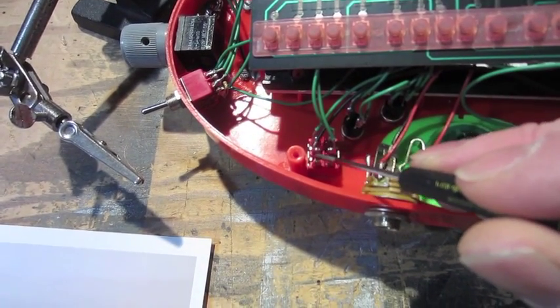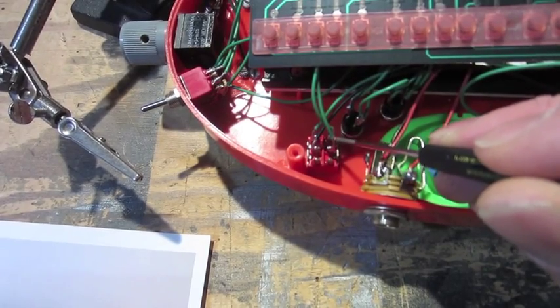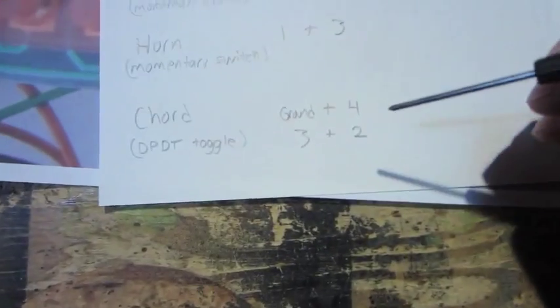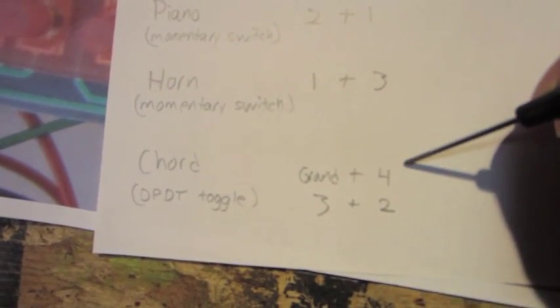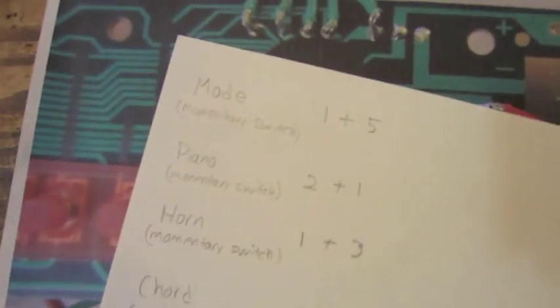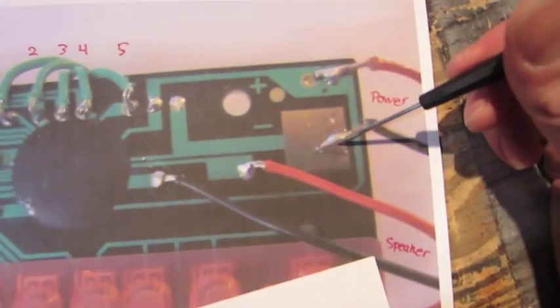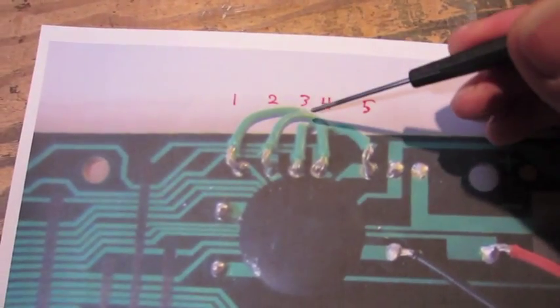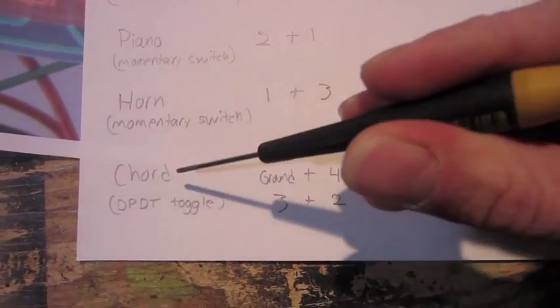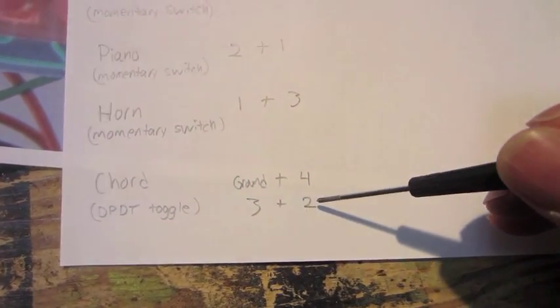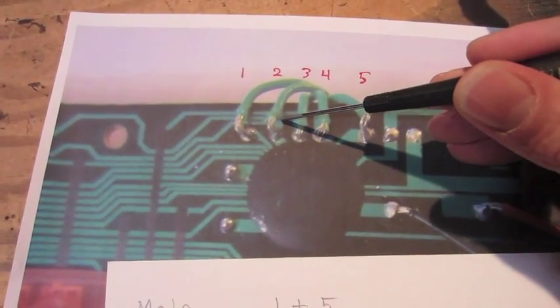So these two wires on this side connect, and these two wires on this side connect. And on that toggle, one side is ground and four. So ground being negative and four on one side of the switch. And the other side of the switch is three and two.